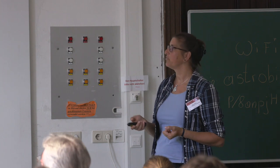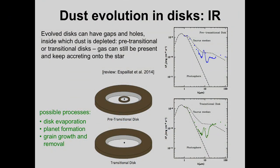There is not a single accepted explanation for inner disk clearing. Planet formation clearing the inner disk is one possibility. Disk evaporation could also clean out the inner disk first in a manner consistent with transitional disk geometry. Additionally, grain growth combined with rapid radial migration of large grains that decouple from the gas can also explain such cavities. There is still no uniquely accepted explanation for what these different disk geometries mean.